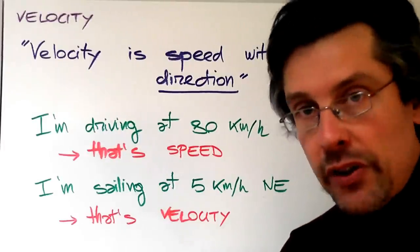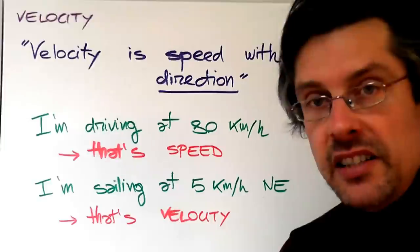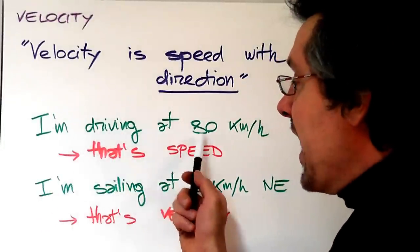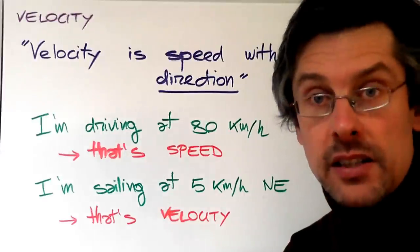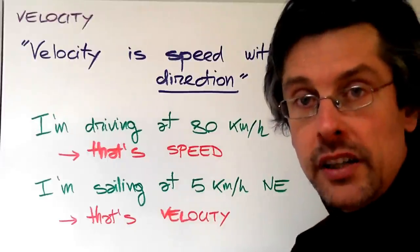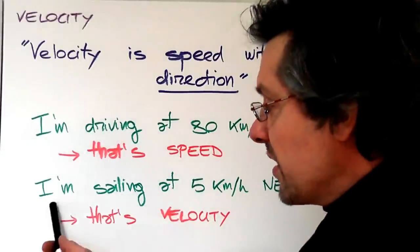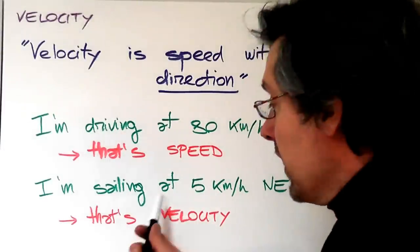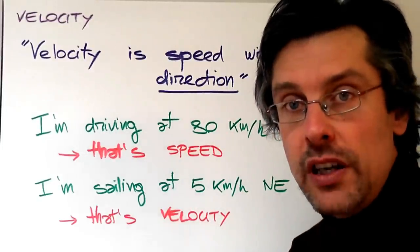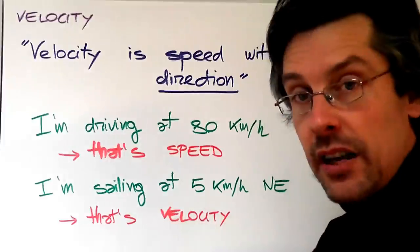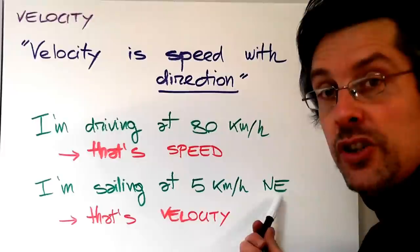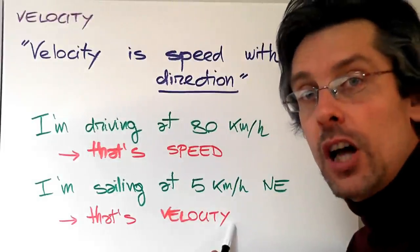In order to understand better the difference between speed and velocity, let's see another two sentences. The first one: I'm driving at 80 kilometers per hour. That's speed, again because I have a number, corresponding unit, and that's it. While the second sentence, I am sailing at 5 kilometers per hour NE, where NE stands for Northeast, is actually telling me something else. It's telling me how fast I'm going but also where and which way I'm going. And that is what we call velocity.